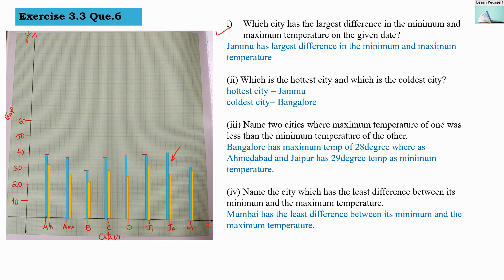The second question: which is the hottest city and which is the coldest city? The hottest city is Jammu, as its bar is the maximum compared to all others. For the coldest city, we check the minimum temperature, and we can see that Bangalore has the minimum temperature.